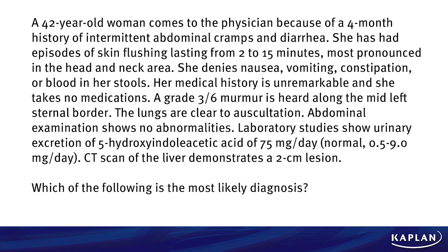A grade 3 out of 6 murmur is heard along the mid-left sternal border. The lungs are clear to auscultation. Abdominal examination shows no abnormalities. Laboratory studies show urinary excretion of 5-hydroxyindoleacetic acid of 75 mg a day, which is much above normal. A CT scan of the liver demonstrates a 2 cm lesion. Which of the following is the most likely diagnosis?